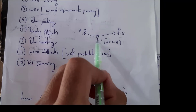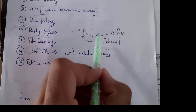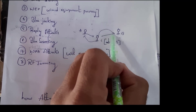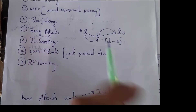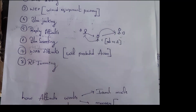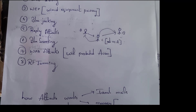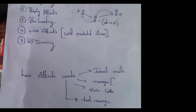The hacker, user C, hacks user A's Facebook account and communicates with user B in the name of user A. User B thinks the message is coming from user A, but actually user C is sending these messages. This is an example of a replay attack.